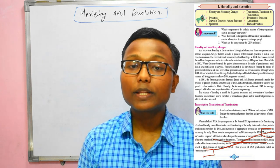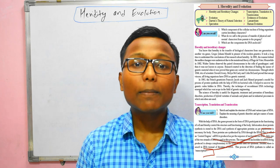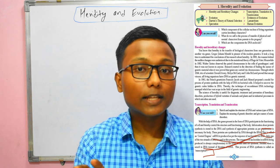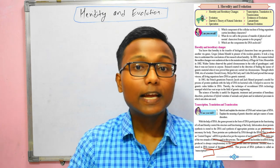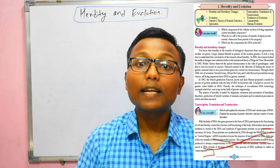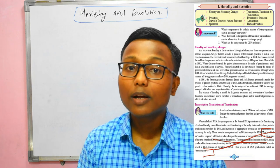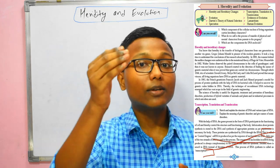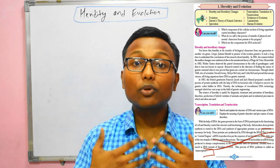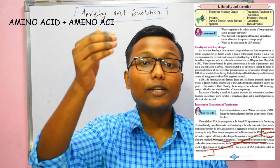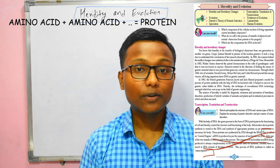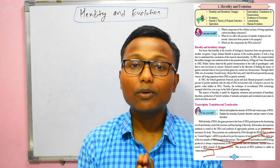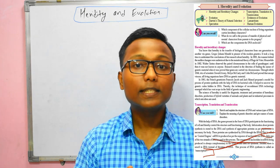rRNA is found in the ribosome. mRNA carries protein synthesis information from DNA to the ribosome. tRNA carries amino acids. DNA is the chain of nucleotides, and protein is a chain of amino acids. tRNA is responsible for carrying those amino acids during protein synthesis.